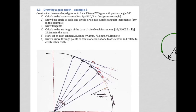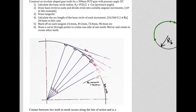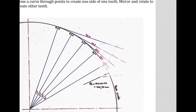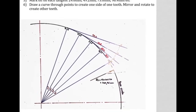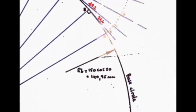We will draw a gear tooth with a 300 mm pitch circle diameter and a pressure angle of 20 degrees. The base circle radius is the pitch circle radius times cosine of the pressure angle. With a 300 mm PCD, the base circle radius works out to 140.95 mm. We draw this base circle on paper using a compass.